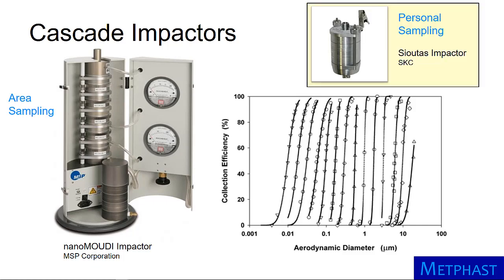However, small versions are available for personal sampling that can be operated with belt-mounted sampling pumps. These personal versions can be used for particles larger than 500 nanometers and have fewer stages and less sizing resolution than other cascade impactors such as the NanoMoody.